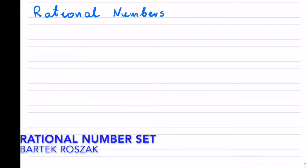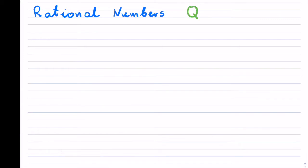Rational numbers, or the rational number set. This is defined with a capital Q, and this particular set is a little bit harder to define.